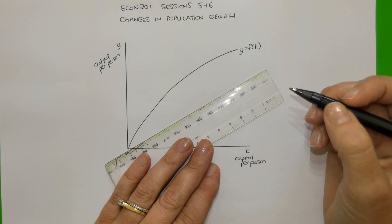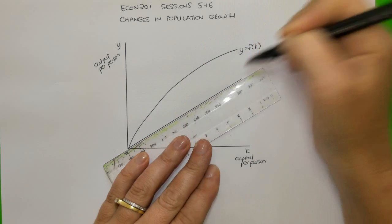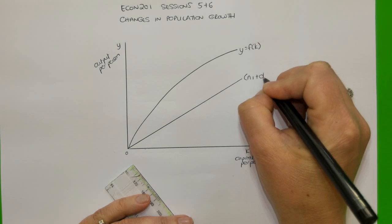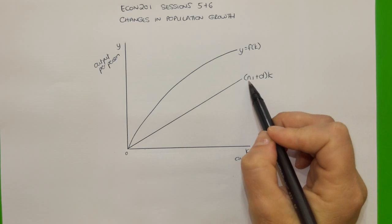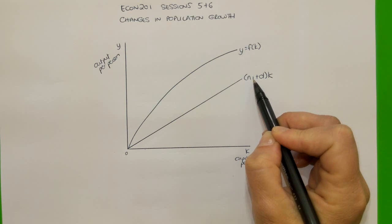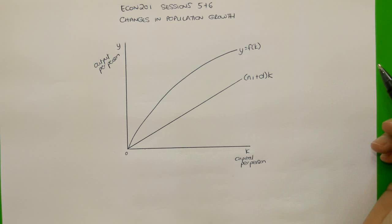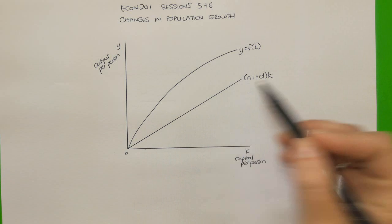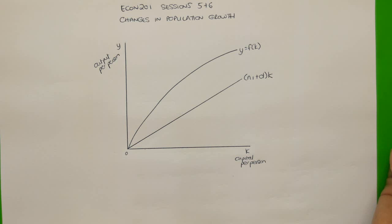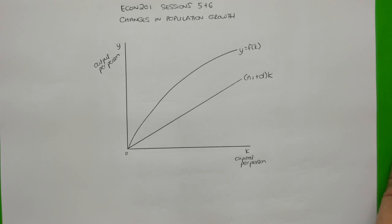I am going to draw in the investment requirement line, and I am going to label it N1 plus DK, because the parameter I am going to be changing is the population growth rate. N1 refers to the original population growth rate, and N2, which we will draw in shortly, refers to the new population growth rate. The investment requirement line shows how much investment will be needed to keep the capital-to-labor ratio at a particular level. The higher the capital-to-labor ratio, the more investment is needed to keep it constant, and the lower the capital-to-labor ratio, the less investment per person is needed.